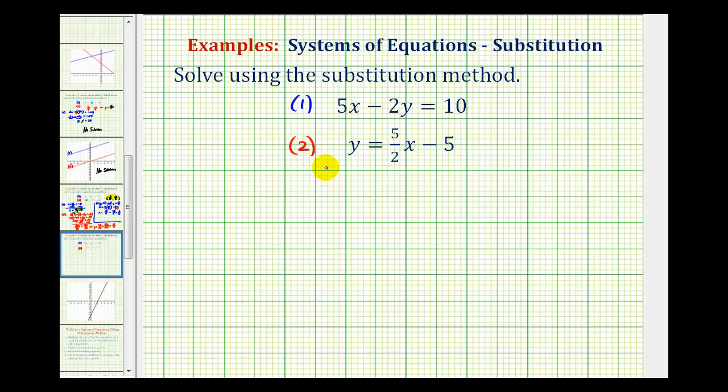The next step in the substitution method is to use this equation here that's solved for y, and perform substitution into equation one. Meaning, if we know that y is equal to five halves x minus five, we can replace y in the first equation with five halves x minus five. Doing this will give us an equation with one variable.